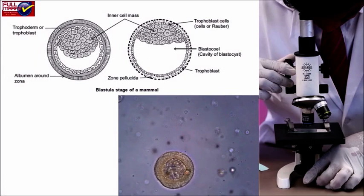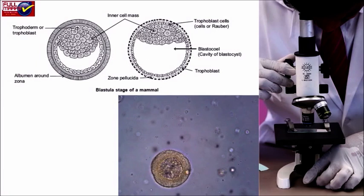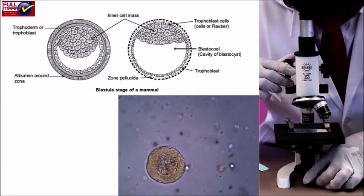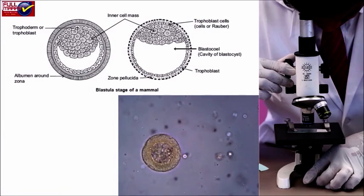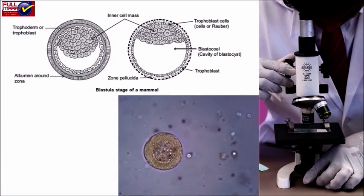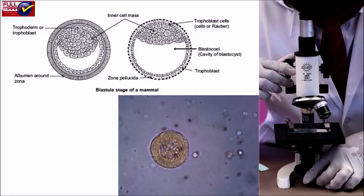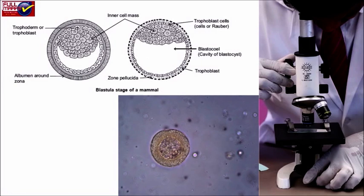There is a fluid-filled cavity called blastocoel. The inner cell mass is the precursor of the embryo. The side of the blastocyte to which the inner cell mass is attached is called the embryonic or animal pole, while the opposite side is called the vegetative pole.